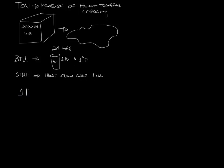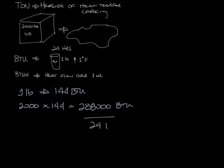So when one pound of ice melts, it absorbs 144 BTU. For 2,000 pounds of ice, it's 2,000 times 144, which is 288,000 BTU. And if you divide that by 24 hours, then you will get 12,000 BTU per hour, or a ton of refrigeration.